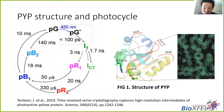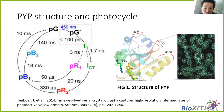First, a little background on PYP. It is a protein that undergoes a photo cycle with numerous intermediate states that accumulate and decay on multiple time scales from picoseconds to seconds. After the protein absorbs blue light, the photo cycle is controlled by a trans-to-cis isomerization of the central chromophore that is covalently linked to Cys-69 of the protein. This paper focused more on the dark state of PYP and improving the resolution limit from the SFX experiment.